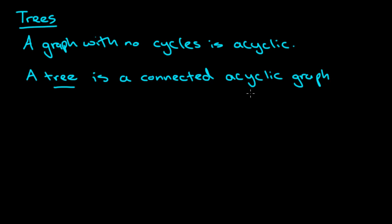More generally, if we have an acyclic graph which is not connected, we can call that a forest, which we think of as a collection of trees. So a forest is an acyclic graph. The main difference between a tree and a forest is that a tree has to be connected.